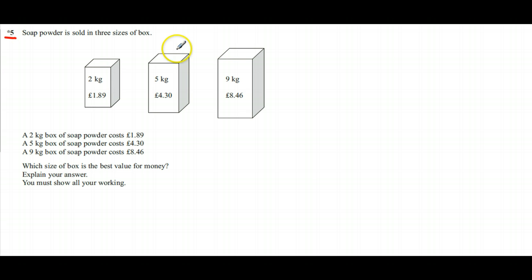Soap powder is sold in three sizes of box: 2 kilograms, 5 kilograms, and 9 kilograms. It tells you the cost of those three different boxes.